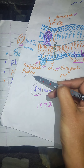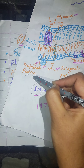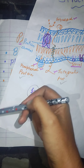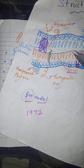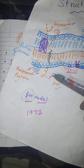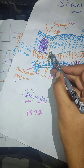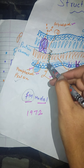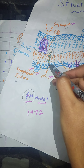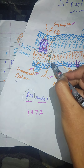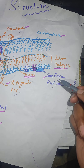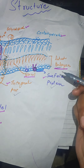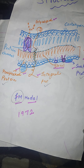Peripheral protein, as its name indicates, is present in the peripheral position of the plasma membrane. Integral protein is embedded in the plasma membrane — this is the transmembrane helix, which indicates the transmembrane helix of the integral protein. Along with that, there are the surface proteins and sterol molecules which are present in the plasma membrane.